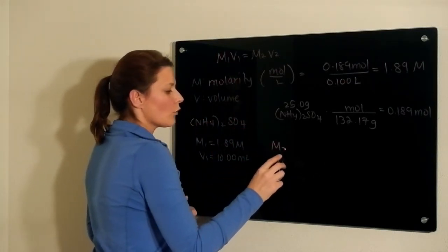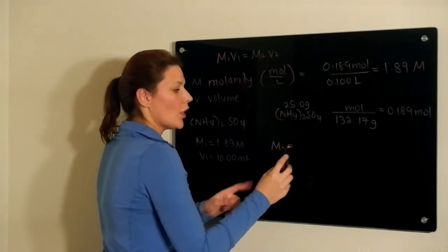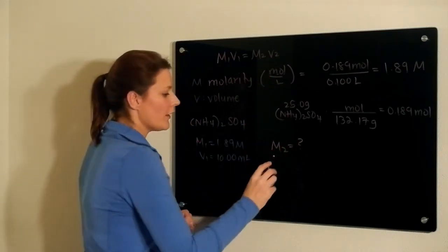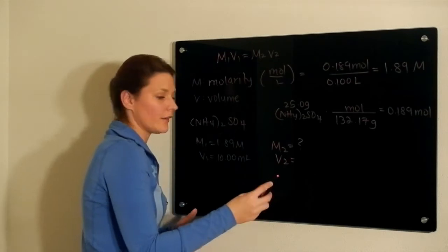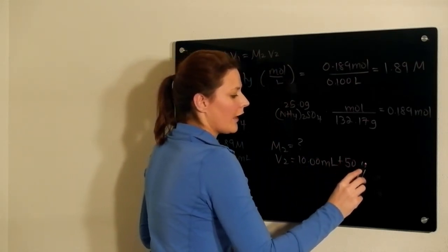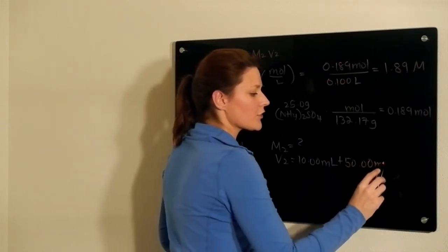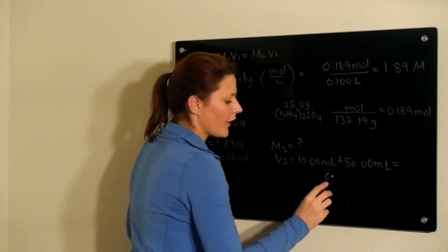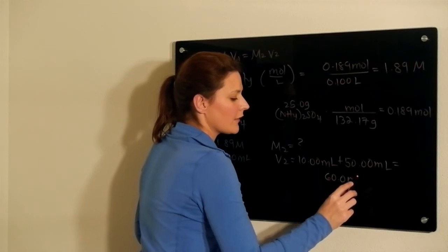We are now onto the next part of the question. M2 is what we are looking for. V2 we are given. We know that we take that 10 milliliter sample, add in 50 milliliters of water, and are left then with a 60 milliliter solution.